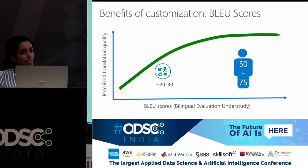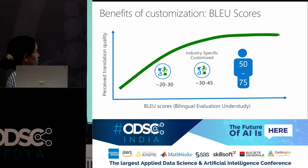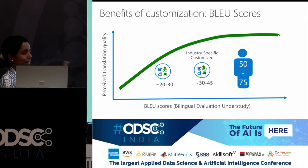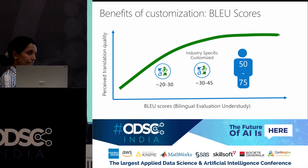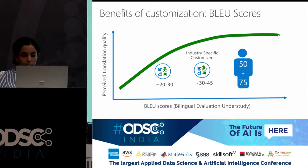The way we evaluate this is by looking at BLEU scores. A generic model on any sort of data would give you a BLEU score of roughly 20 to 30. A human sits between 50 and 75 — one of the best. But if you give some additional industry-specific data, you can actually bump up the BLEU scores — not as perfect as a human, but right in between, like 30 to 45 depending on your data.